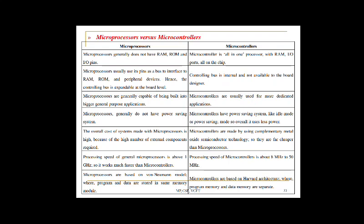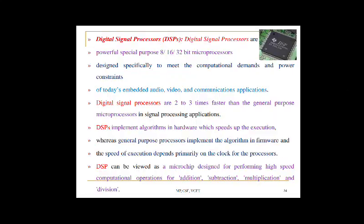Due to low cost, wide availability, memory-efficient instruction set, mature development tools, and boolean processing capability, Intel's 8051 is the most popular microcontroller. 8051 family derivatives are widely used in high-volume consumer electronics, entertainment, and gadgets where cost-cutting is essential. Next is the digital signal processor (DSP) — a powerful special-purpose 8, 16, or 32-bit microprocessor designed to meet the computational demands and power constraints of embedded audio, video, and communication applications. DSPs are two to three times faster than general-purpose microprocessors in signal processing.